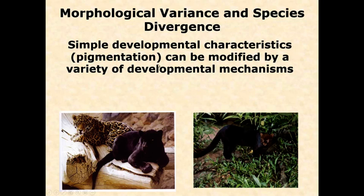Simple developmental characters like pigmentation can be modified by a variety of developmental mechanisms — we see changes to the gene itself and changes to gene regulation. The take-home message is that evolution is the same at all levels; it's just a matter of time and scale. Within populations, we may see a bit more changes to the genes themselves, since populations are the laboratory where new alleles are introduced. Many major differences between species are regulation changes, though we still see both patterns.